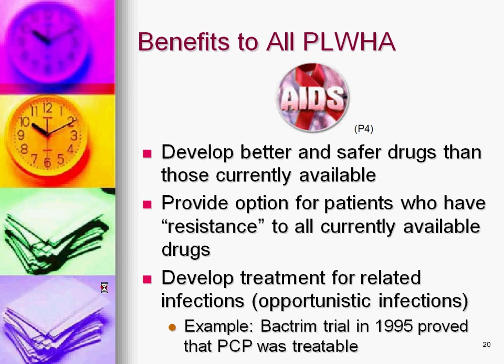There are also benefits specific to people living with HIV and AIDS. Obviously, better and safer drugs than what we currently have available is something people are always on the lookout for — we always want something new coming down the pipeline. Clinical trials can provide options for people who have resistance to all or most of the currently available HIV medications. There's also a big benefit in developing treatments for related opportunistic infections. In 1995, there was a Bactrim trial that definitively proved that PCP was treatable — before that, we didn't know. A single trial substantively improved both the health and quality of life of people living with HIV, because we were able to treat a serious opportunistic infection and learned we could prevent it in people who hadn't yet had it.